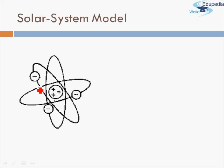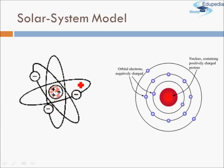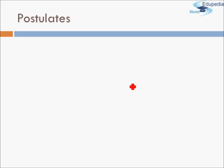So it has a central part of positive charge — as you can see here, the one I'm marking in red — and then there are electrons which are negatively charged, revolving around this nucleus just like our planets revolve around the Sun. Another way of representing the same model: this red color is the nucleus containing positively charged protons, and around this nucleus revolve electrons which are negatively charged.